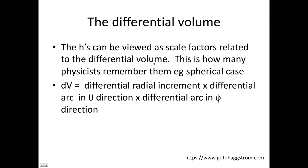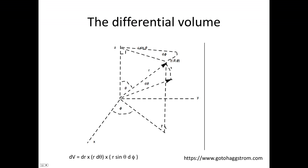Now, the differential volume is the key to understanding where the h has come from. And this is how the physicists remember it, certainly how I remember it. In the spherical case, the differential volume is just the differential radial increment, which will be just dr, times the differential arc in the theta direction, times the differential arc in the phi direction. It gives you a volume.